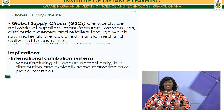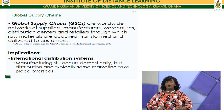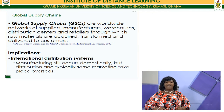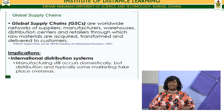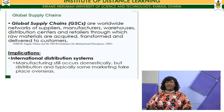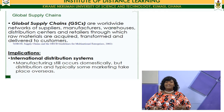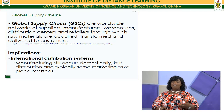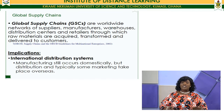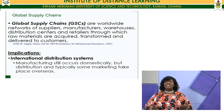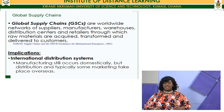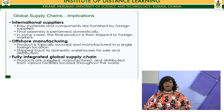Such complexity has implications for logistics managers and organizations in general. For example, international distribution systems will get more widened — manufacturing may still occur domestically, but distribution and typically some marketing take place overseas. That means you need to deal with a wide range of customers in different geographical areas, and distribution must be managed to overcome barriers beyond national borders.